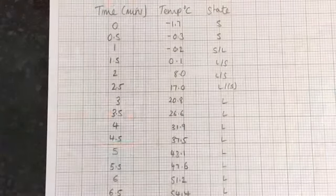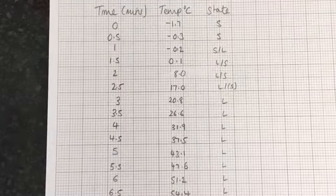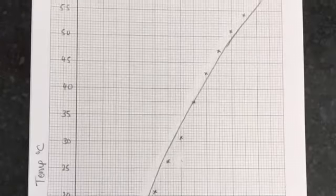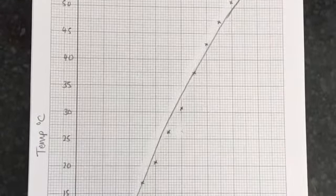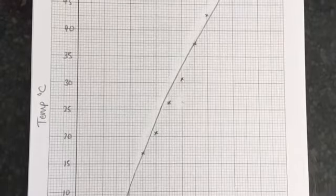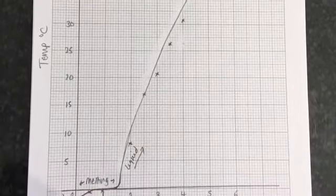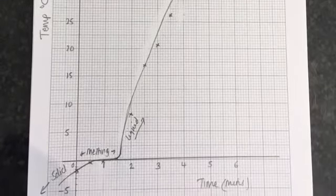It was important that I noted the state, solid or liquid, with each of my readings. When I plotted the results on a graph, I used the points to draw a smooth curve, and I labelled the state changes and the point on the graph where the ice was melting.